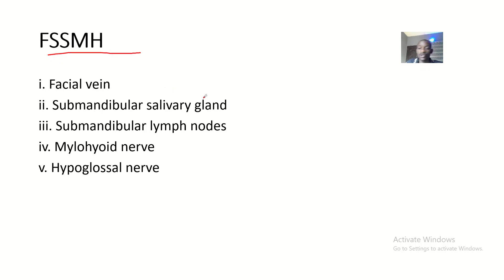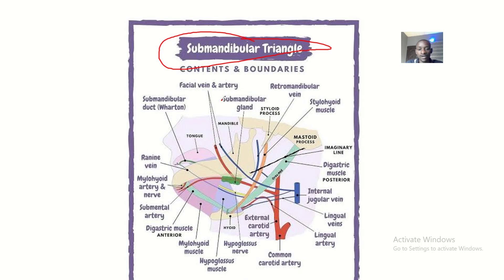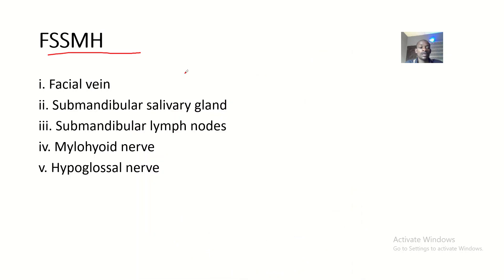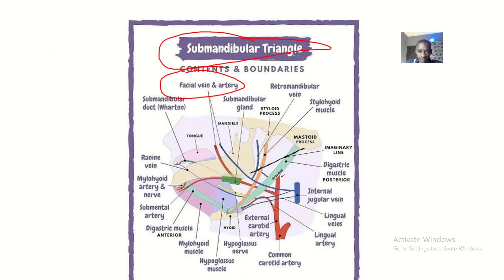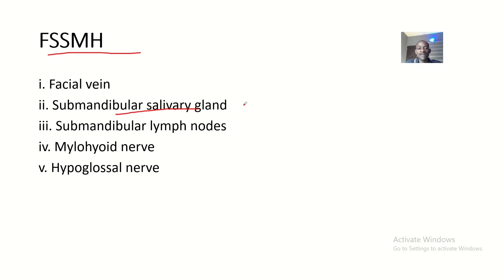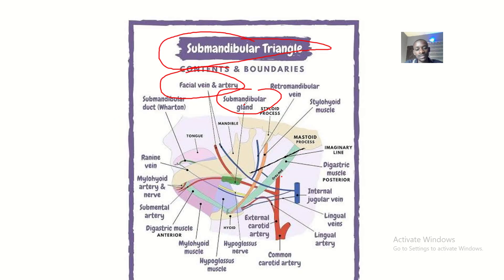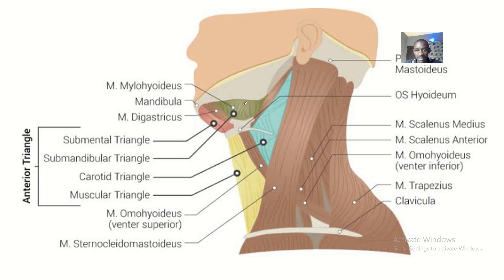In the triangle, we have the facial vein right here. We also have the submandibular salivary gland — just trace the line down. And we have the submandibular lymph nodes, though they are not indicated in this picture — this picture is mainly just to show the muscles, not the contents.